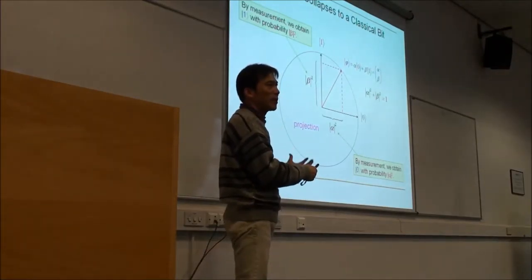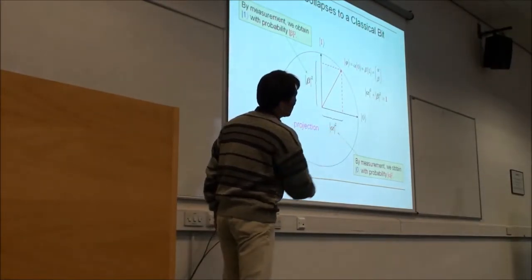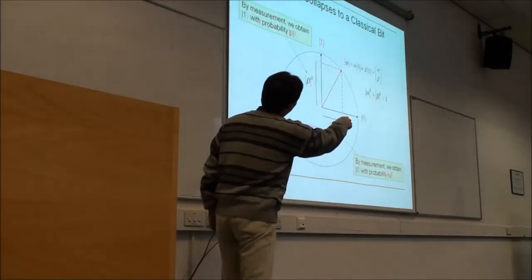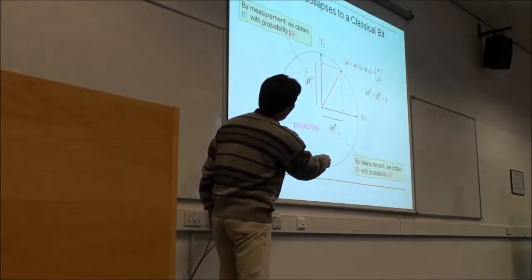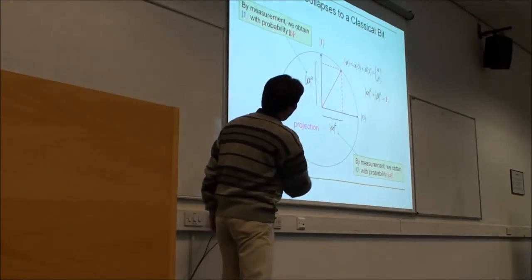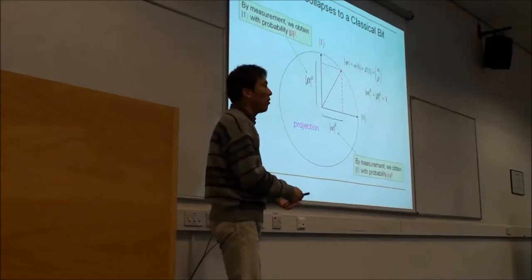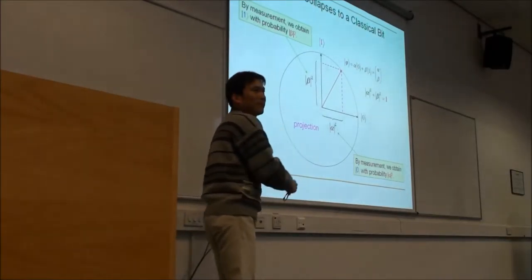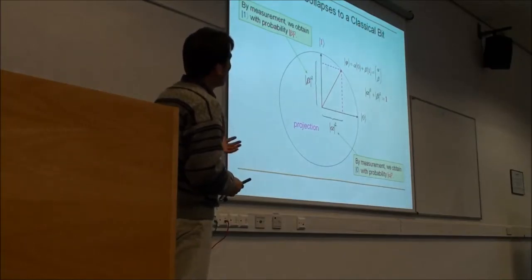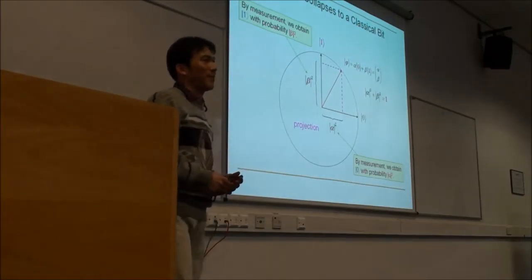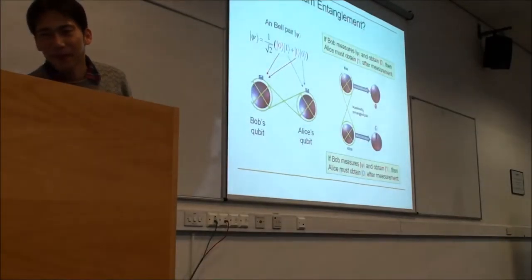Measurement works as a projection. If you have a vector representing a quantum state, it clamps to either the 0 or 1 vector, with the length corresponding to the probability of getting each outcome. We call it a projection measurement, because we are actually taking a projection.